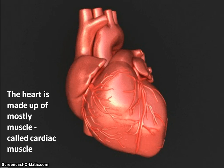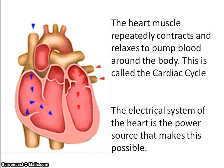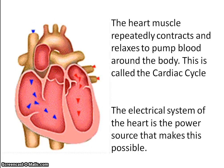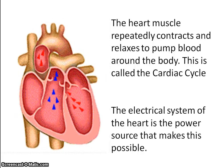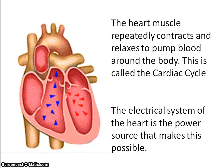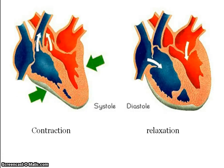The heart is made up of mostly muscle, specifically cardiac muscle. The heart muscle repeatedly contracts and relaxes in order to pump blood around the body, lungs, and the rest of the body. We'll be looking at the electrical system that makes this repeated contraction and relaxation possible. Contraction of the heart is referred to as systole and relaxation is diastole.